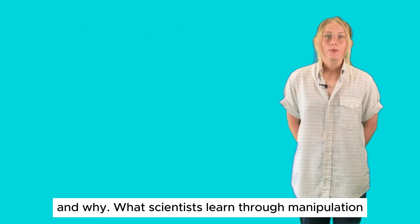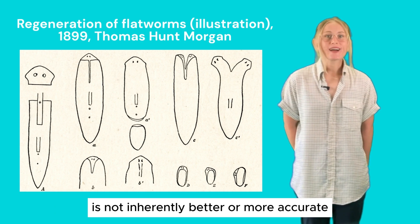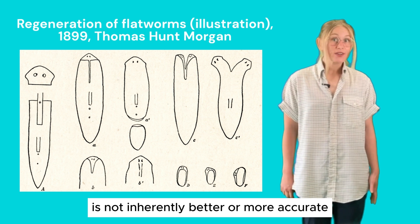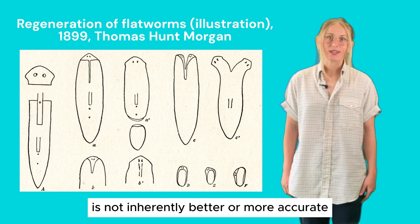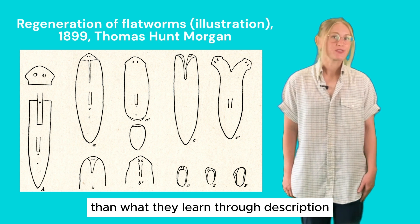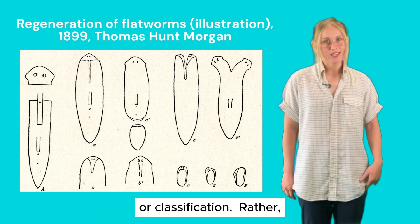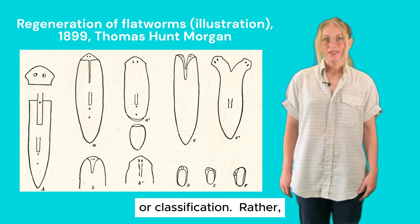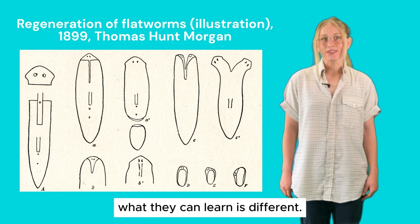What scientists learn through manipulation is not inherently better or more accurate than what they learn through description or classification. Rather, what they can learn is different.